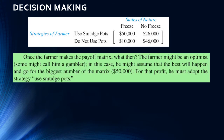So let's look at what happens once the farmer makes the payoff matrix. There's no really right or wrong answer here — it's really about making choices. For example, the farmer might be an optimist, or even a gambler. In that case, he might assume the best will happen and go for the biggest number in the matrix: $50,000. For that profit, he must adopt the strategy of using smudge pots. So if our decision maker is an optimist, we look at all the numbers in the payoff matrix and simply pick the highest one — in this case, because it's profit.